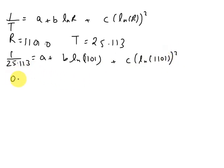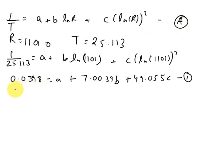So this simply turns out to be 0.0398 equals A plus 7.0039B plus 49.055C. And let us take this as equation 1. Next,